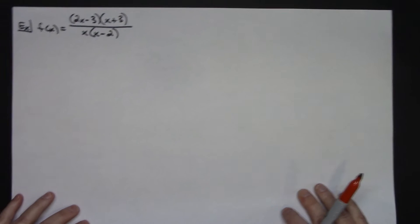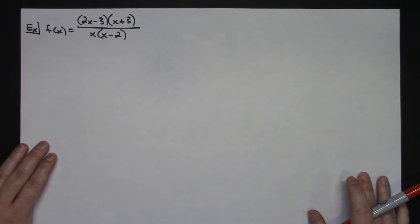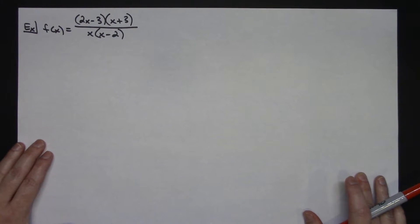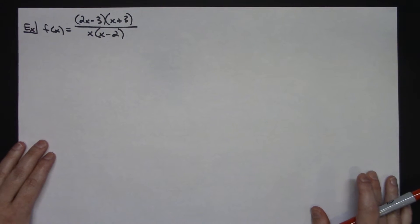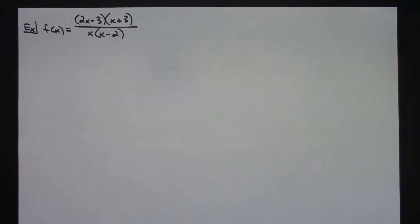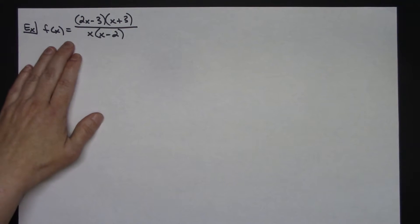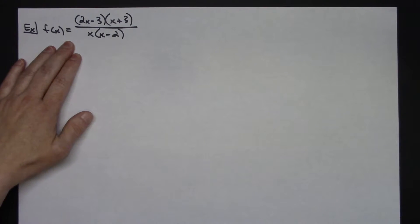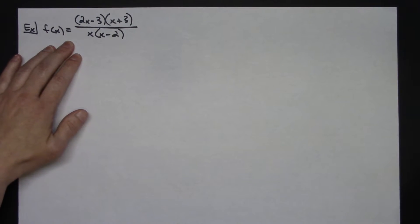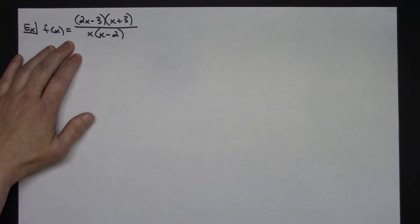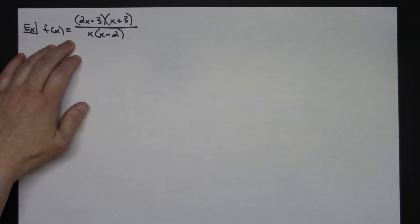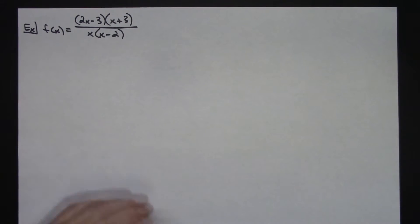Now let's take this specific example and work it through, actually find them, and then show what it looks like when we graph it. We've got this rational function f(x) equals (2x minus 3)(x plus 3), all over x times (x minus 2).